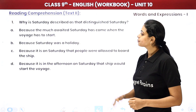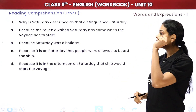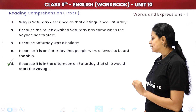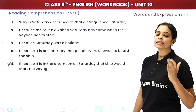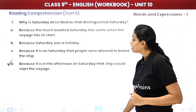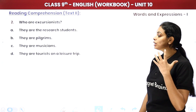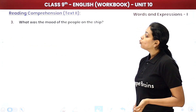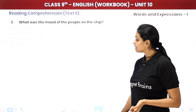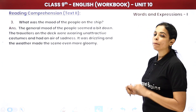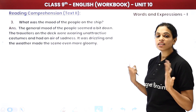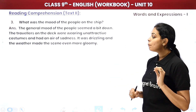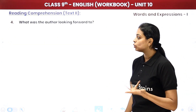Based on this passage, our questions are: why is Saturday described as 'that distinguished Saturday'? Because it is on that Saturday afternoon that the ship would start the voyage. Who are excursionists? They are people who go somewhere for leisure and return the same day. What was the mood of the people on the ship? The general mood seemed gloomy and sad — travelers wore unattractive costumes, had an air of sadness, and it was drizzling, making the scene even more gloomy.